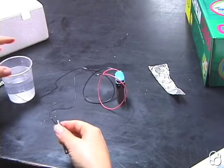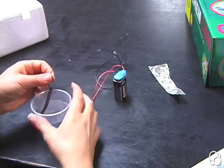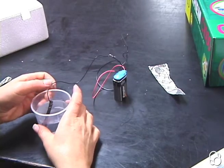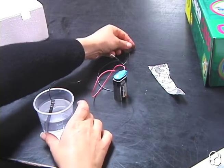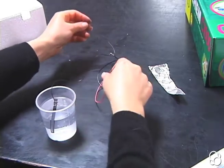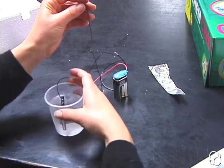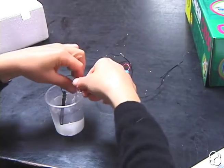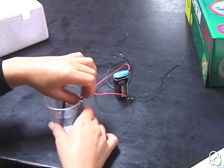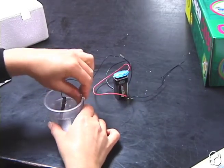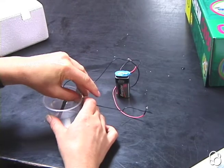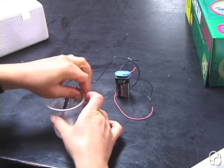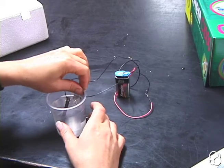Then we're going to put the carbon rod into the solution, and the other end we're going to connect with a piece of aluminum foil. We're going to stick the aluminum foil into the solution as well. You can press it against the wall and connect the wire by folding it over like this so it'll stay in place.